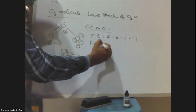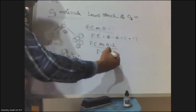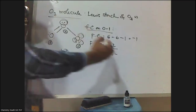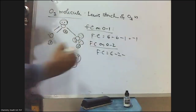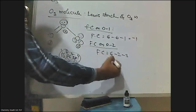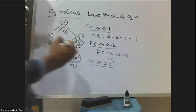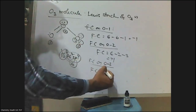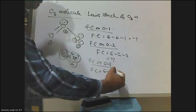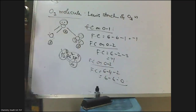Now let me calculate the formal charge on oxygen two. The number of valence electrons is six. The number of unshared electrons is two, and the number of bonds is three. So formal charge = 6 − 2 − 3 = +1. The formal charge on oxygen two is plus one. Now for oxygen three: formal charge = 6 − 4 − 2 = 0. So the formal charge on oxygen three is zero.